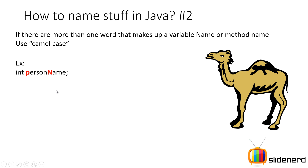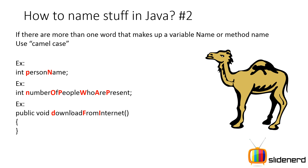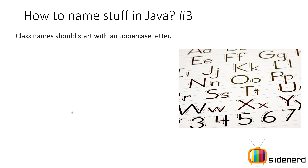In camel case, the first word is fully lowercase and every subsequent word starts with a capital letter. Take another example: `int numberOfPeopleWhoArePresent` — notice those capital letters, which are the first letter of each word after the first one. The same applies to method names; for example, `downloadFromInternet` is named the same way.